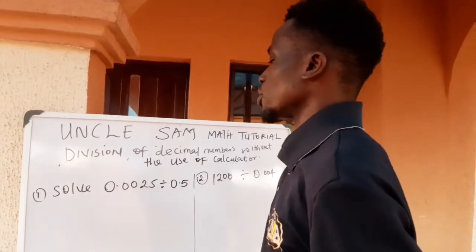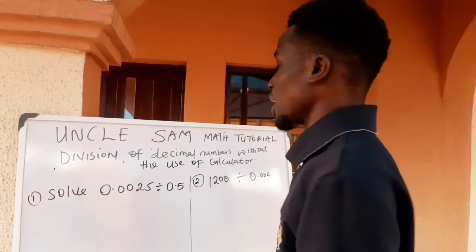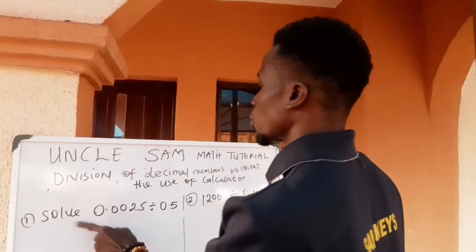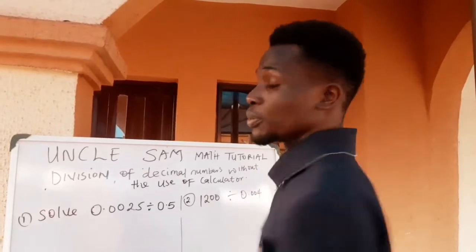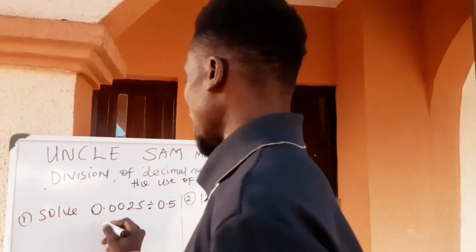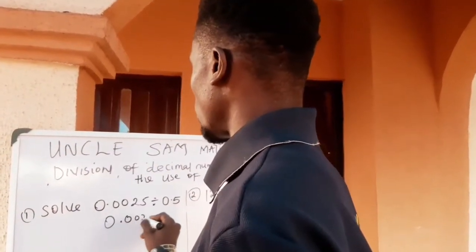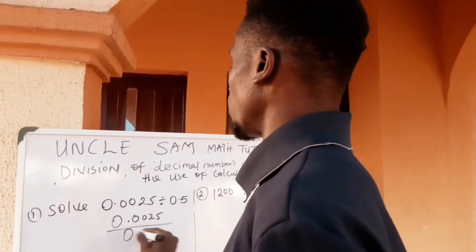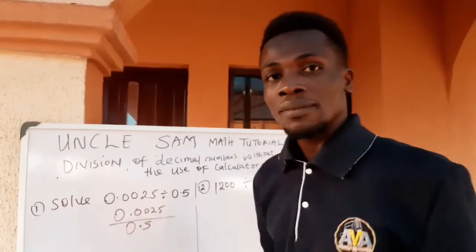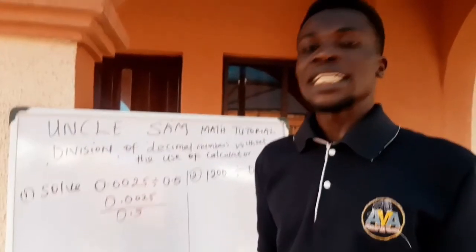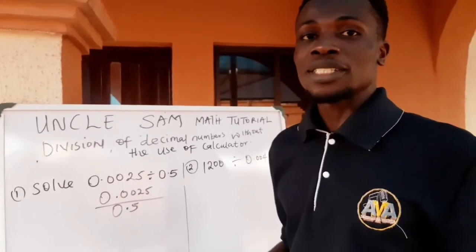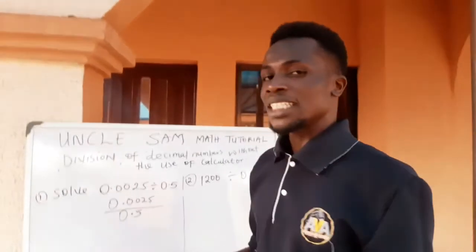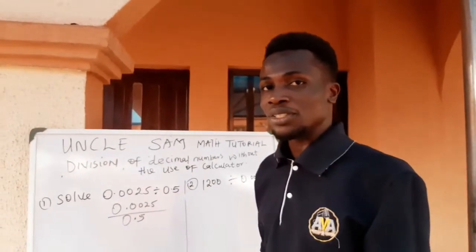Here we have: solve 0.025 divided by 0.5. The first thing we're going to do is make the number on the left side our numerator. So we have 0.0025 as the numerator, divided by 0.5 as the denominator. The next thing to do is count the number of decimal places, because we want to clear the decimal point and do a normal division.